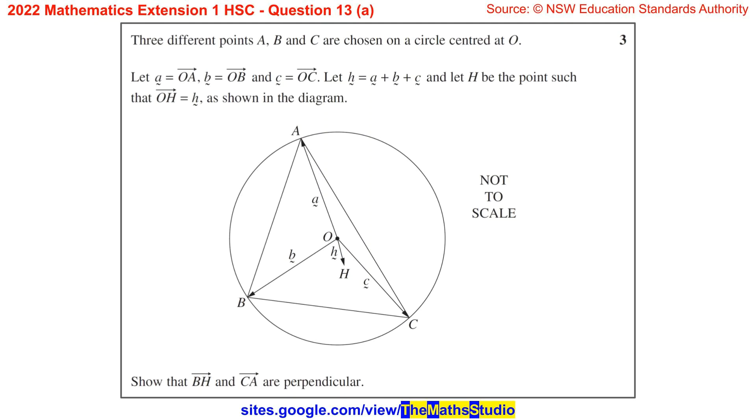Let vector H equal vector A plus vector B plus vector C and let H be the point such that vector OH equals H as shown in the diagram. Show that vector BH and vector CA are perpendicular.